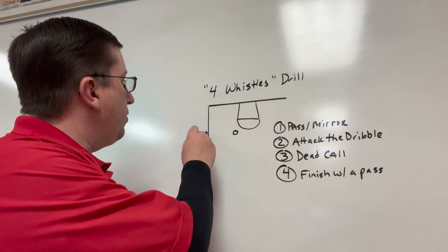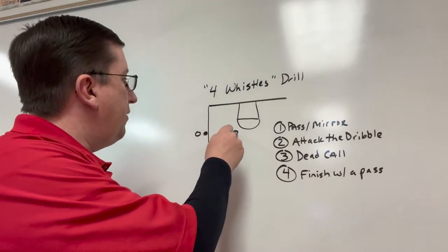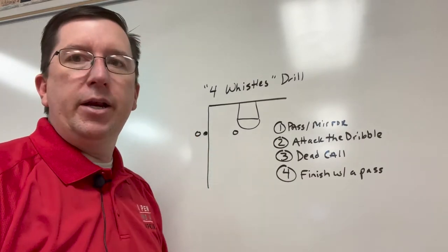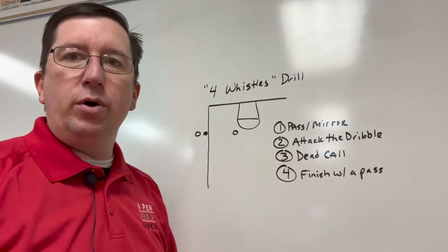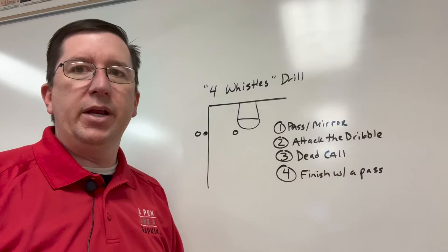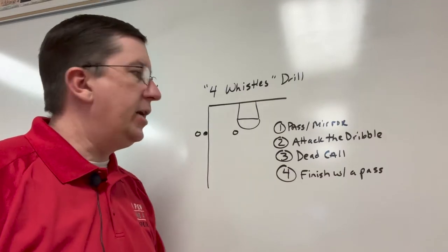We've got the ball here on the sideline. We like to start it on the sideline. We've got the offensive player here. We've got the next player in line here. We're going to blow the whistle four times and run through this really quickly in about 15-20 seconds each group.